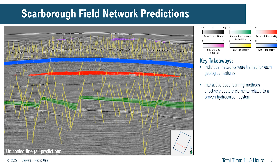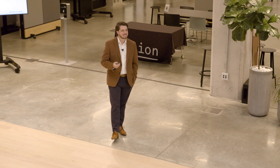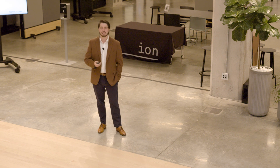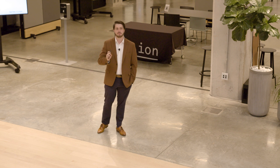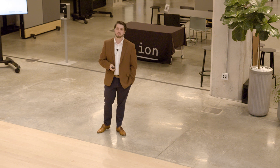We can also take the same approach for characterizing shallow gas. These are all predictions — not a label and then a prediction on the same line — they're being predicted on the complete opposite end of the survey. This entire process, from data import to labeling to the predictions, is all done in 11 and a half hours. That's just under a day to characterize the entire petroleum system elements for the Scarborough gas field — a very accelerated process, especially when using that interactive approach to fine-tune those labels and zero in on the optimal solution.